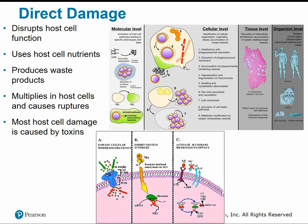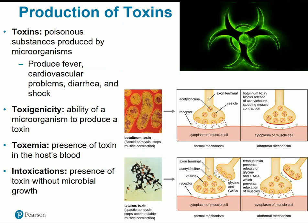Pathogens can also cause direct damage to host cells by disrupting normal cell function, using host cell nutrients, and producing harmful waste products. Some pathogens reproduce inside host cells and cause them to rupture. However, most host cell damage is caused by toxins — poisonous substances produced by microorganisms. Toxins are usually the primary factor of an organism's pathogenic properties.